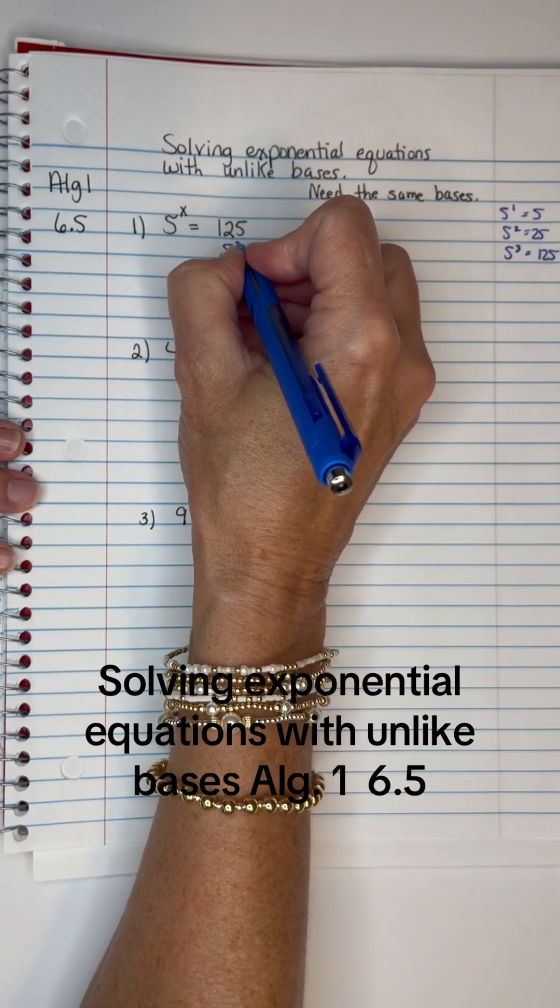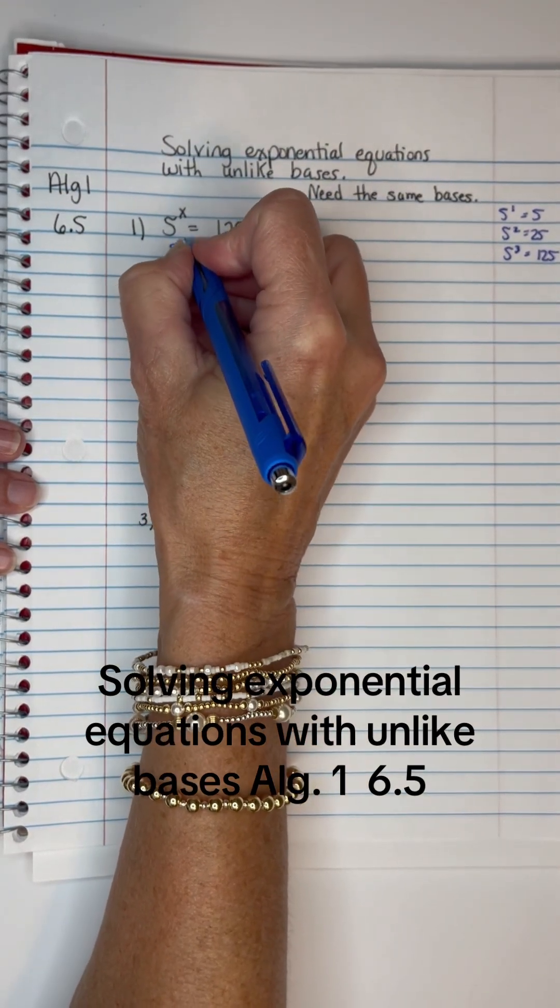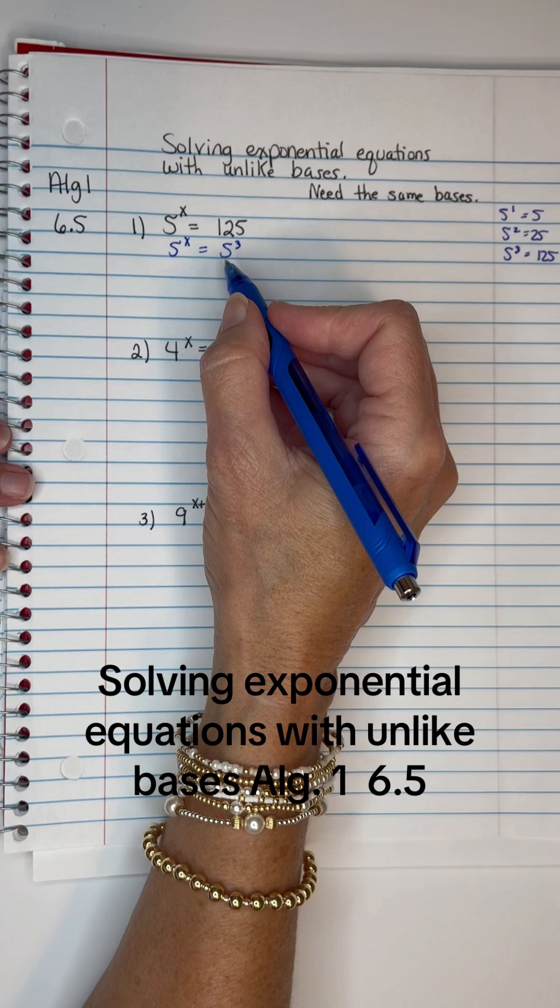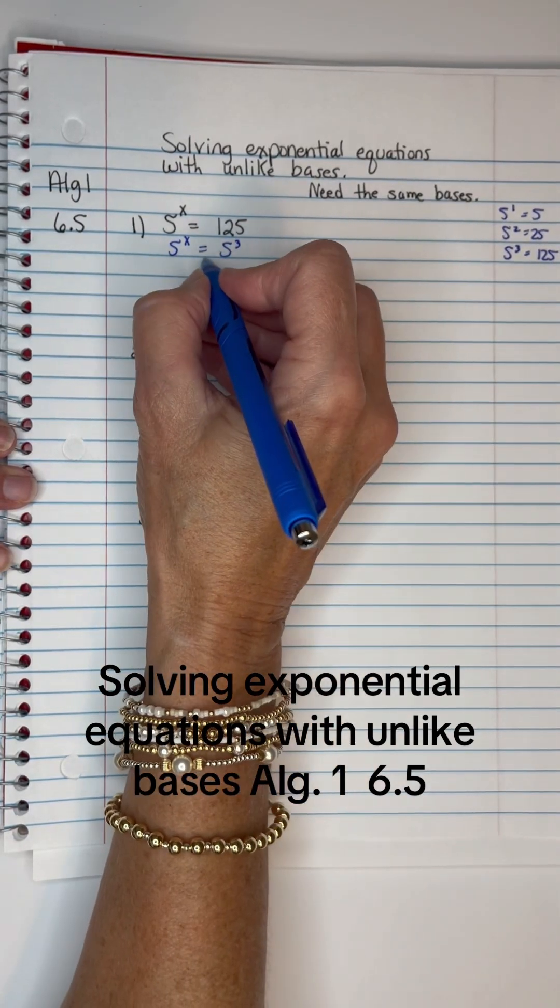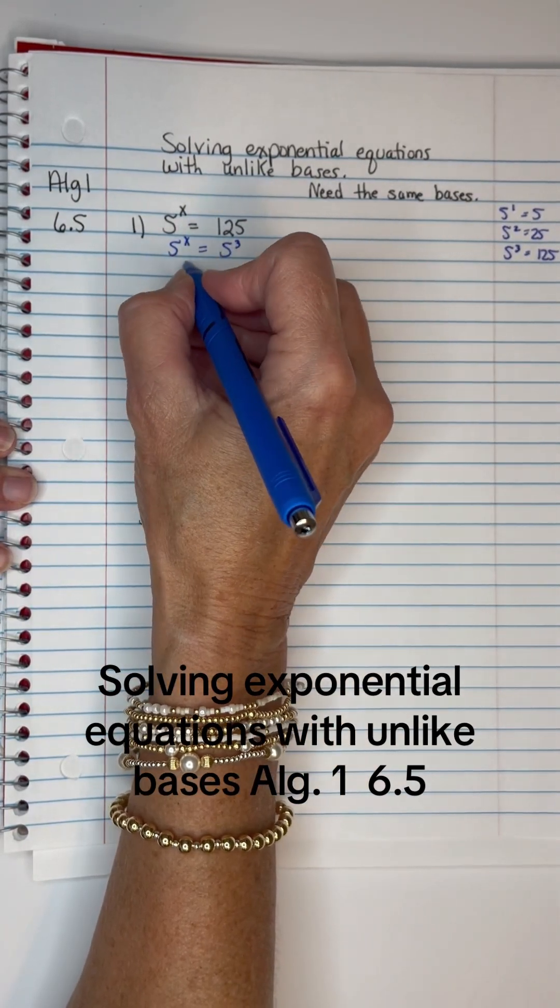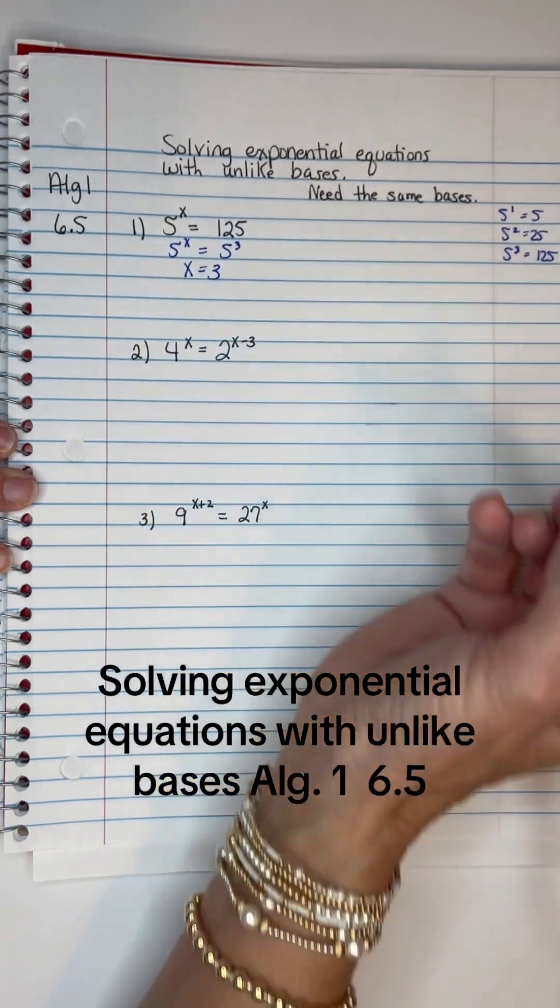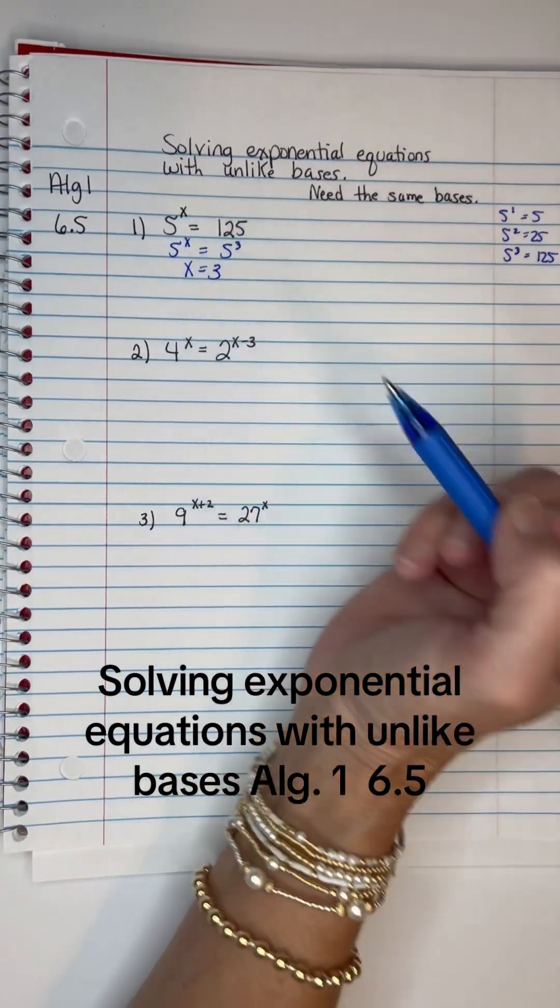So we found it already. I'm going to make this 5 cubed, so 5^X equals 5 cubed. All I have to do now is let the exponents equal each other. X equals 3, so 5 cubed equals 125.